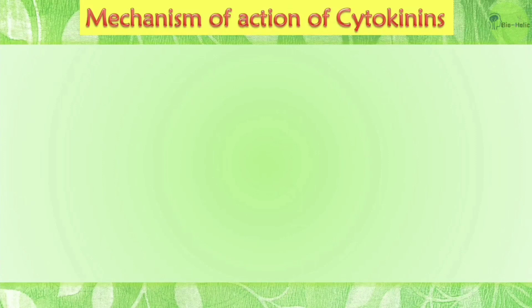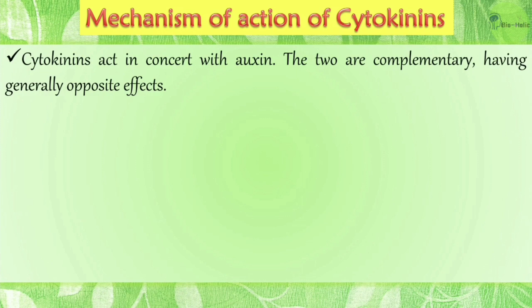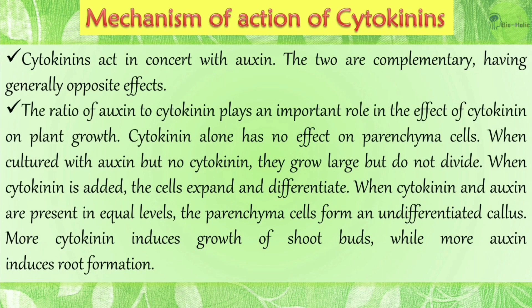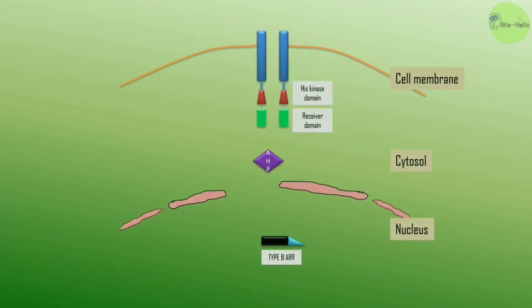Cytokinins act in concert with auxin — the two are complementary, having generally opposing effects. The ratio of auxin to cytokinin plays an important role in cytokinin's effect on plant growth. Cytokinin alone has no effect on parenchyma cells; when cultured with auxin but no cytokinin, cells grow large but do not divide. When cytokinin is added, cells expand and differentiate. When cytokinin and auxin are present in equal levels, parenchyma cells form an undifferentiated callus. More cytokinin induces shoot bud growth, while more auxin induces root formation.